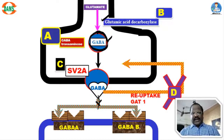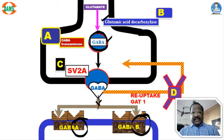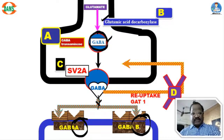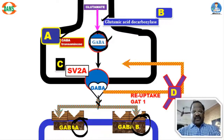Once GABA is released, it acts on two important receptors. The two important receptors for GABA are: number one, GABA-A receptor; number two, GABA-B receptor. GABA-A receptor activation opens a chloride ion channel, so it is called a ligand-gated receptor. Whereas GABA-B is a G-protein coupled receptor — specifically a Gi subtype. GABA also undergoes metabolism by an enzyme called GABA-transaminase, and finally GABA from the synapse undergoes reuptake.